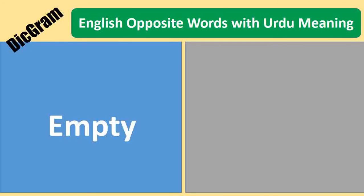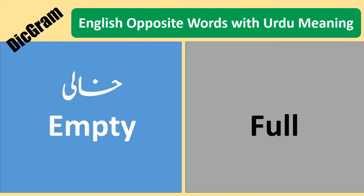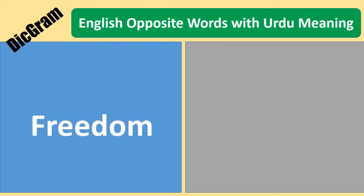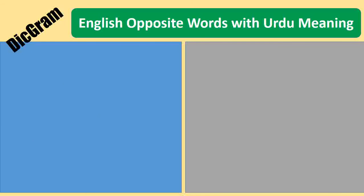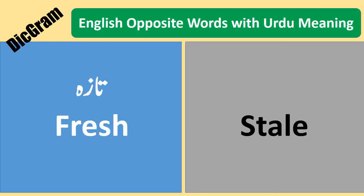Empty — Halli. Full — Barahua. Freedom — Azadi. Slavery — Ulami. Fresh — Taza. Stale — Basi.